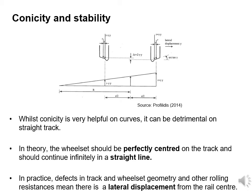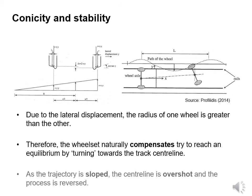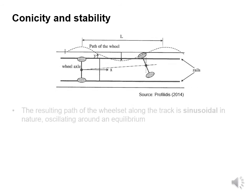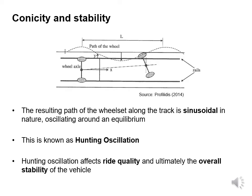Due to lateral displacement, the radius of one wheel is greater than another. Therefore, the wheel set naturally compensates and tries to reach equilibrium by turning towards the track centre line. As the trajectory is sloped, the centre line is overshot and the process is reversed. The resulting path of the wheel set along the track is sinusoidal in nature, oscillating around an equilibrium. This is known as hunting oscillation — the term originating from the fact that the system hunts for an equilibrium. Hunting oscillation affects ride quality and ultimately the overall stability of the vehicle.